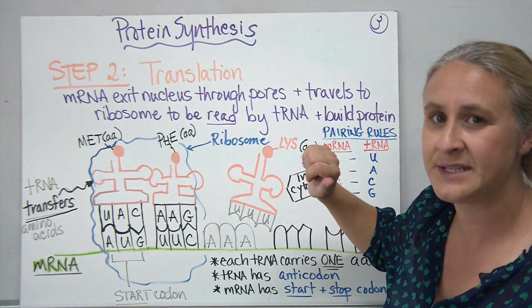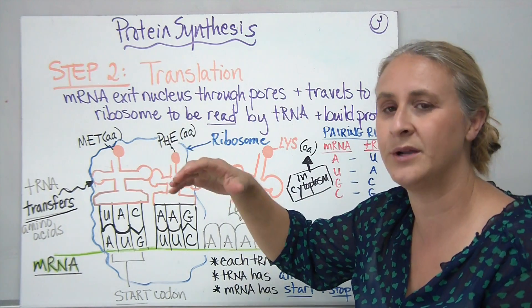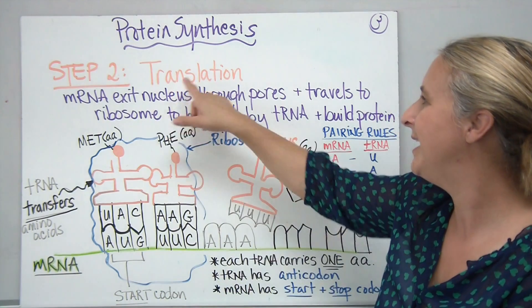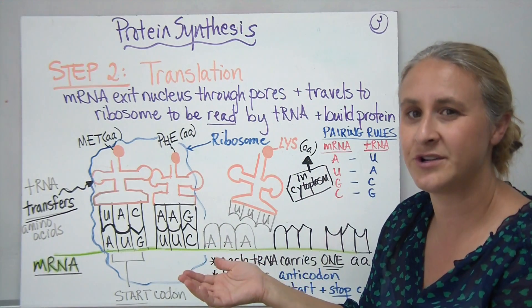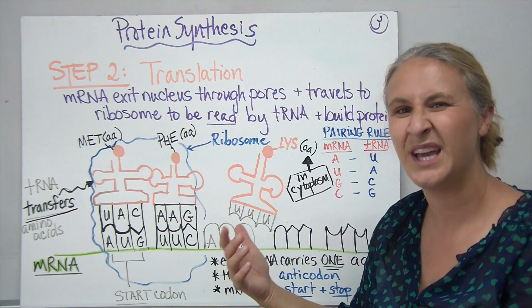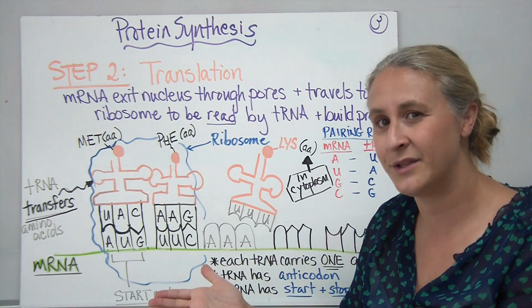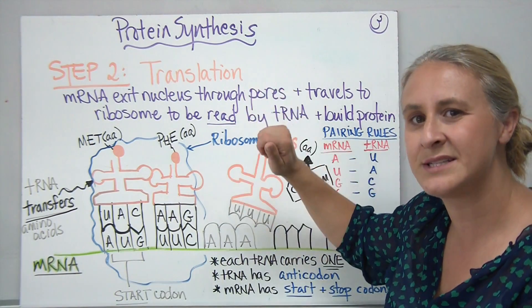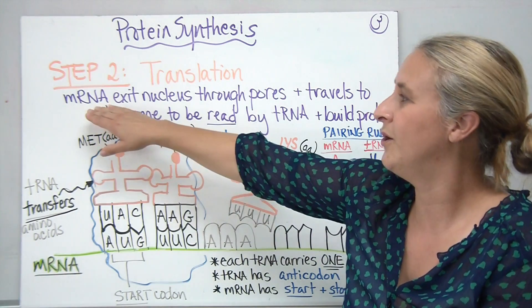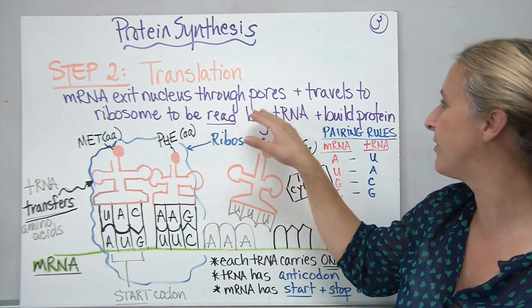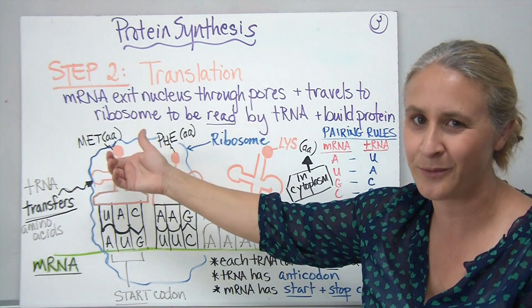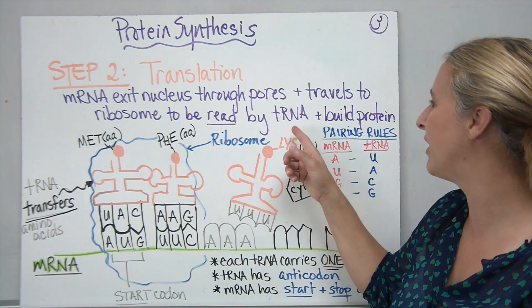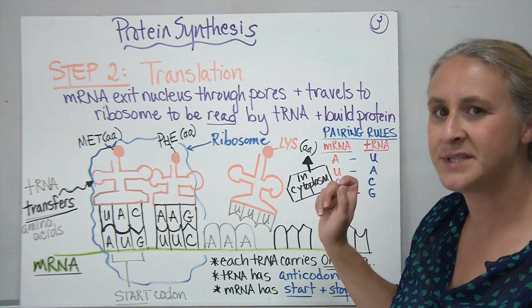Once it leaves the nucleus, we move on to step two: translation. In step one, we wrote down the code from the DNA, and it moved across the nuclear membrane through the pores. Now we're going to translate that code. Most people don't understand what those A's, T's, C's, and G's mean, and the body doesn't recognize them either — it recognizes amino acids and proteins, not the DNA code. So during this step, the messenger RNA exits the nucleus through the pores and travels to the ribosome to be read by something called tRNA, or transfer RNA, which is a new molecule that helps us build a protein.